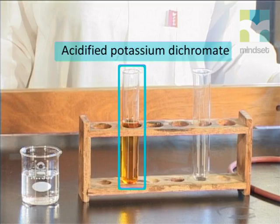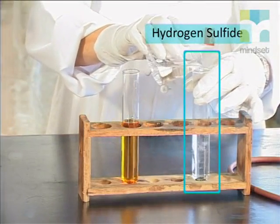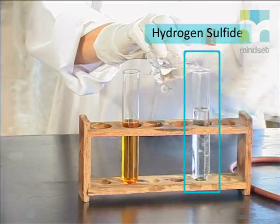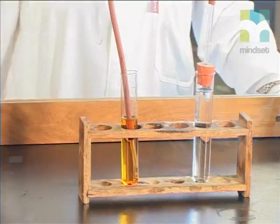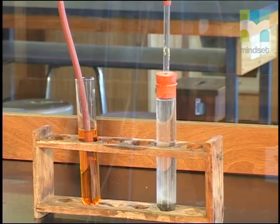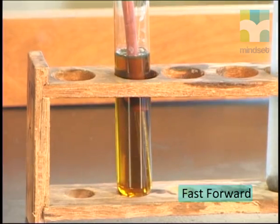Note the acidified potassium dichromate color — it's orange. Acidified means that we have added some acid to the potassium dichromate. We now add the hydrogen sulfide to the acidified potassium dichromate. Can you see any changes? We see that the orange color has turned greenish-brown.